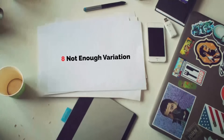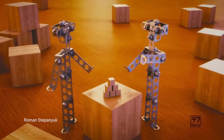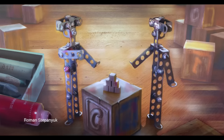Another dreadful composition pitfall is not enough variation. The human eye loves variation — when we travel through the image, we need visual stimuli. So add variation in models, variation in textures, and variation in lighting, and you're good to go.